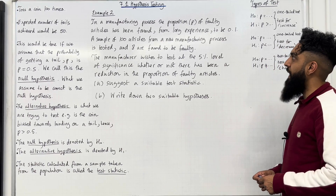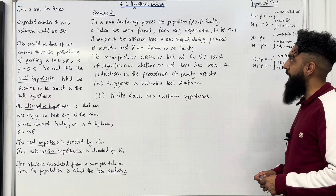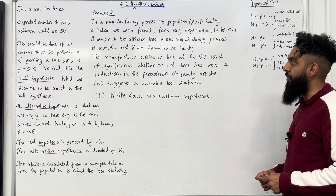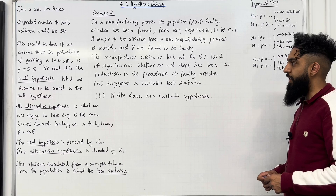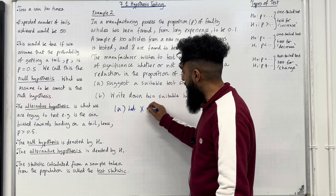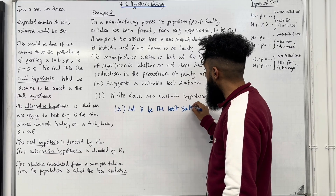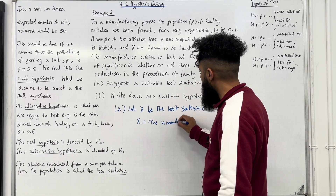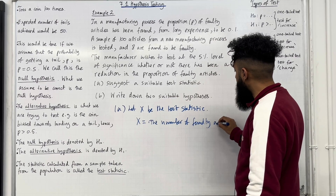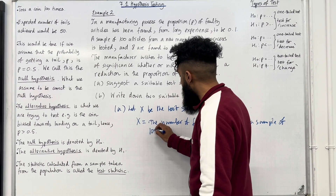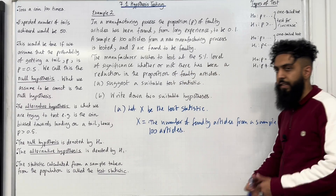Moving on to Example 2. In a manufacturing process, the proportion P of faulty articles has been found from long experience to be 0.1. A sample of 100 articles from a new manufacturing process is tested and 8 are found to be faulty. The manufacturer wishes to test at the 5% level of significance whether or not there has been a reduction in the proportion of faulty articles. Part A: suggest a suitable test statistic. Let capital X be the test statistic — X equals the number of faulty articles from a sample of 100 articles. That is the test statistic.